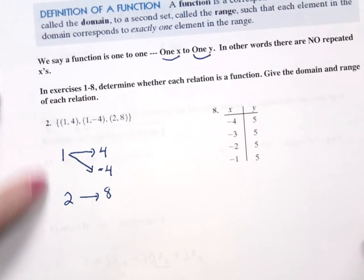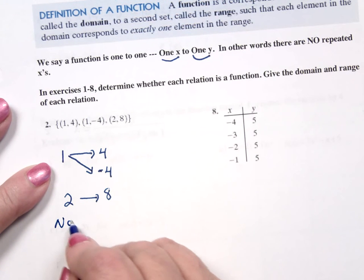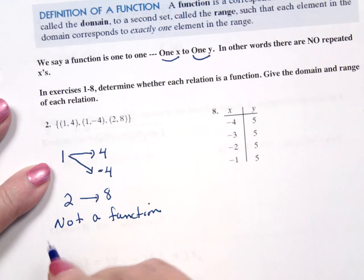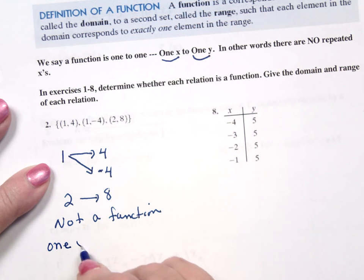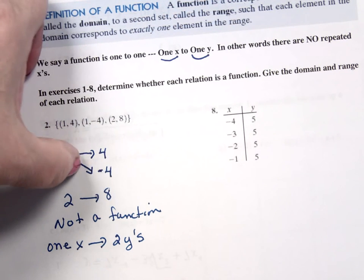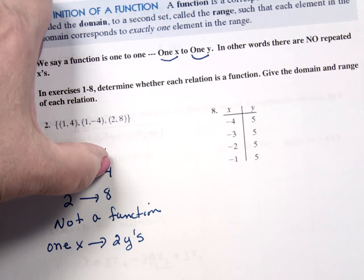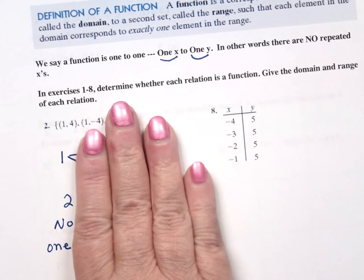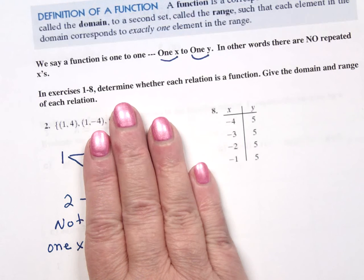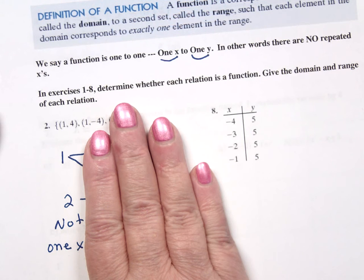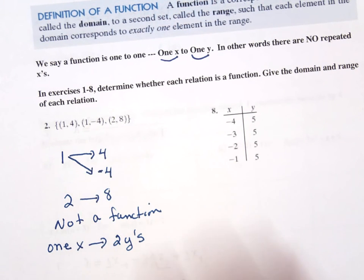And from the map, I can say this is not a function, because one X goes to two Y's. One goes to four. One also goes to negative four, so it can't be a function. Because one X must only go to one Y. If I were to cover up the Y values, the map tells me that I have one X, and he's going to two places. Is that the only reason it can't be a function? Yes.